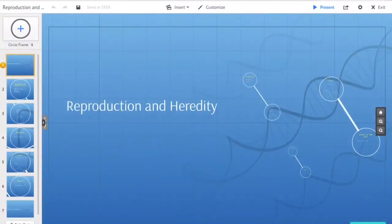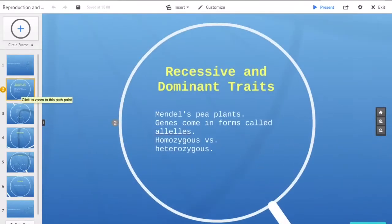All right, reproduction and heredity. Let's look at what we got to know. Recessive and dominant traits - this will be on the test almost for sure.